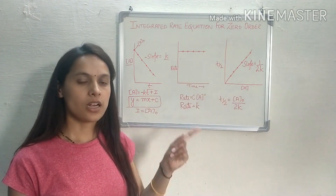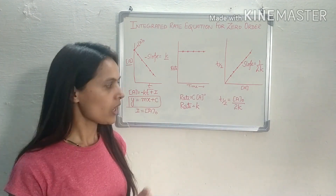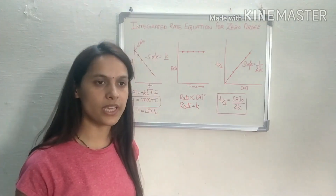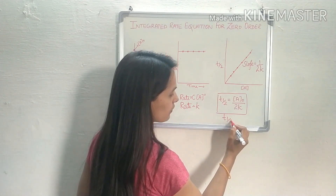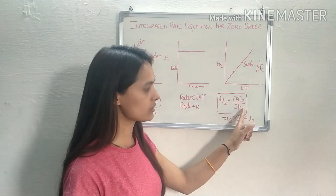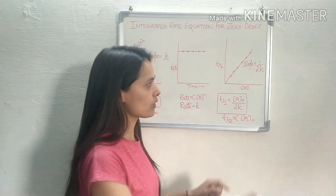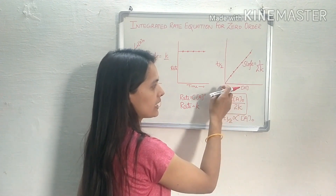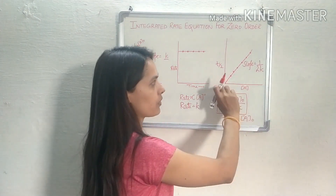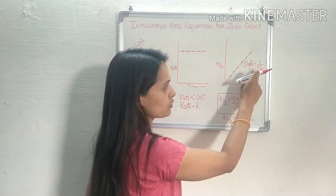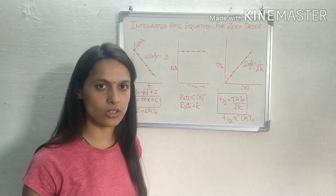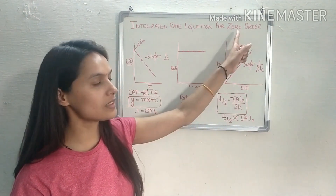Now move to our third graph. The third graph is based on half-life period for zero order. The half-life period for zero order which we derived was: t½ equals A₀ divided by 2k, meaning t½ is directly proportional to the initial concentration. We will plot this graph — because a directly proportional relation is there, the graph is a straight line, and because of the positive sign it moves upward. The slope becomes 1/(2k), so by finding the value of slope we can find out the value of k for zero order reaction.